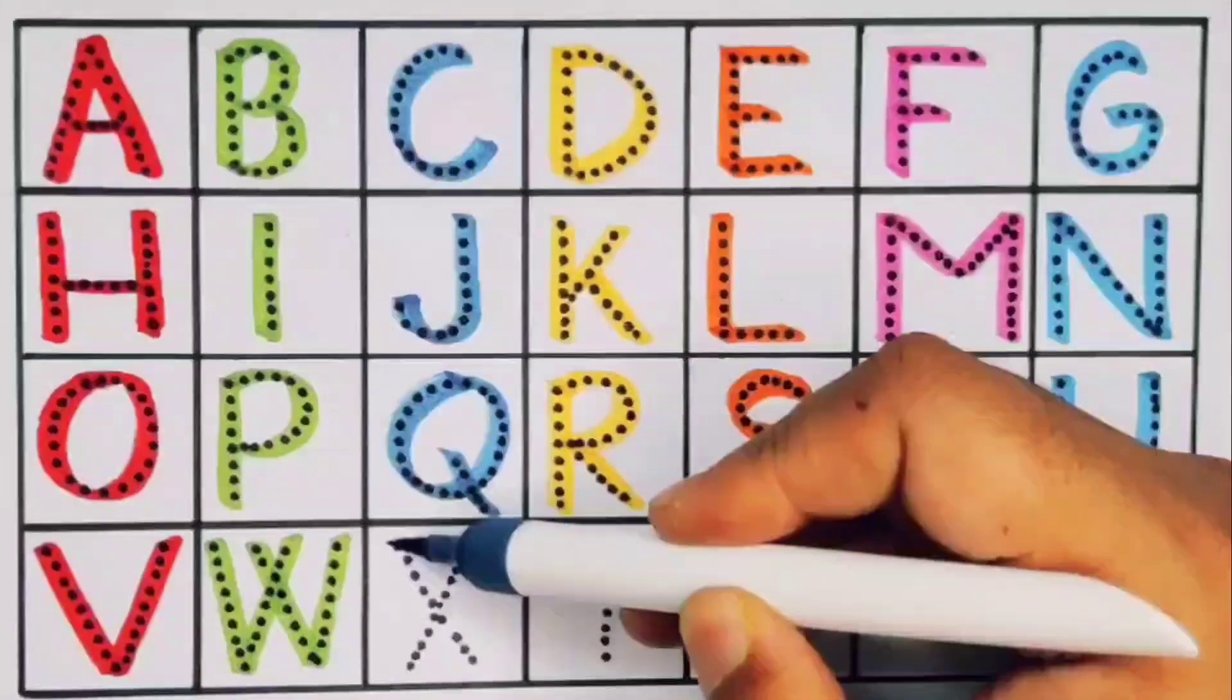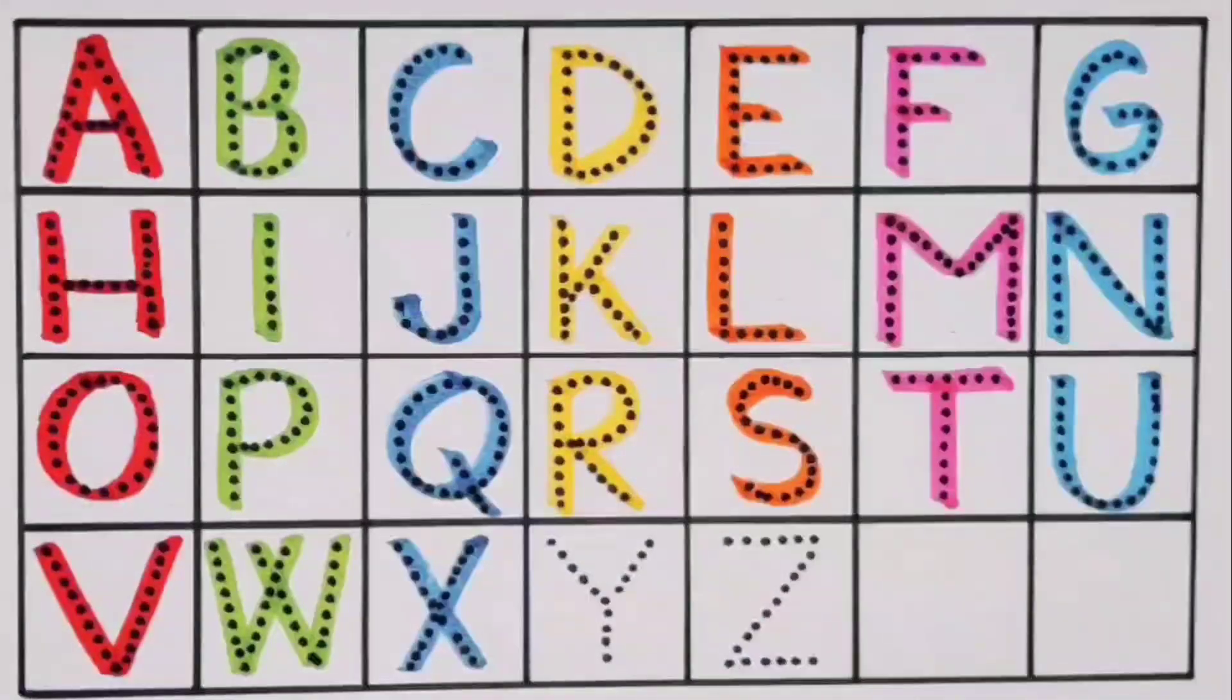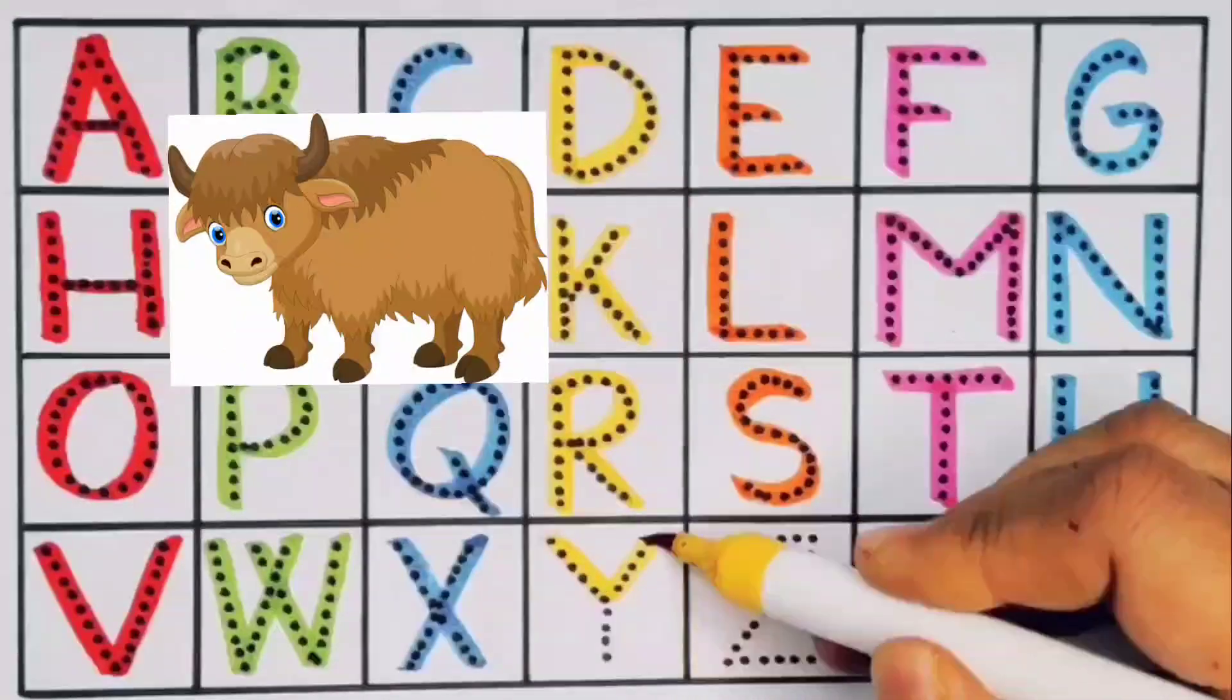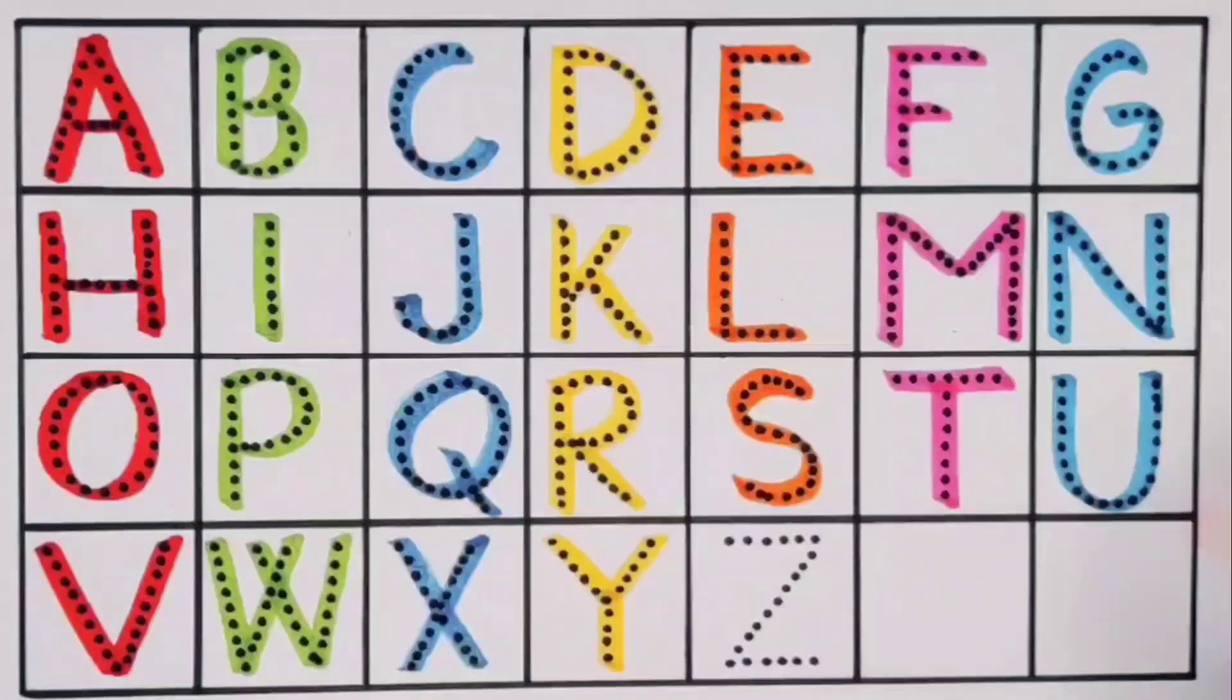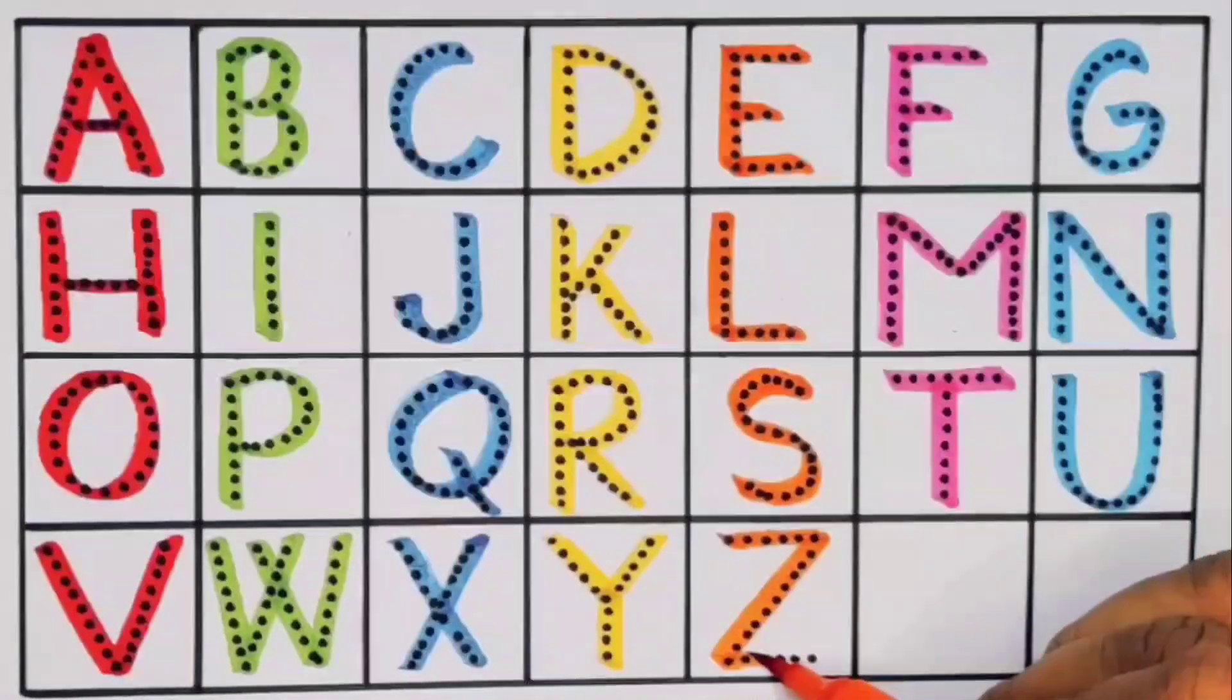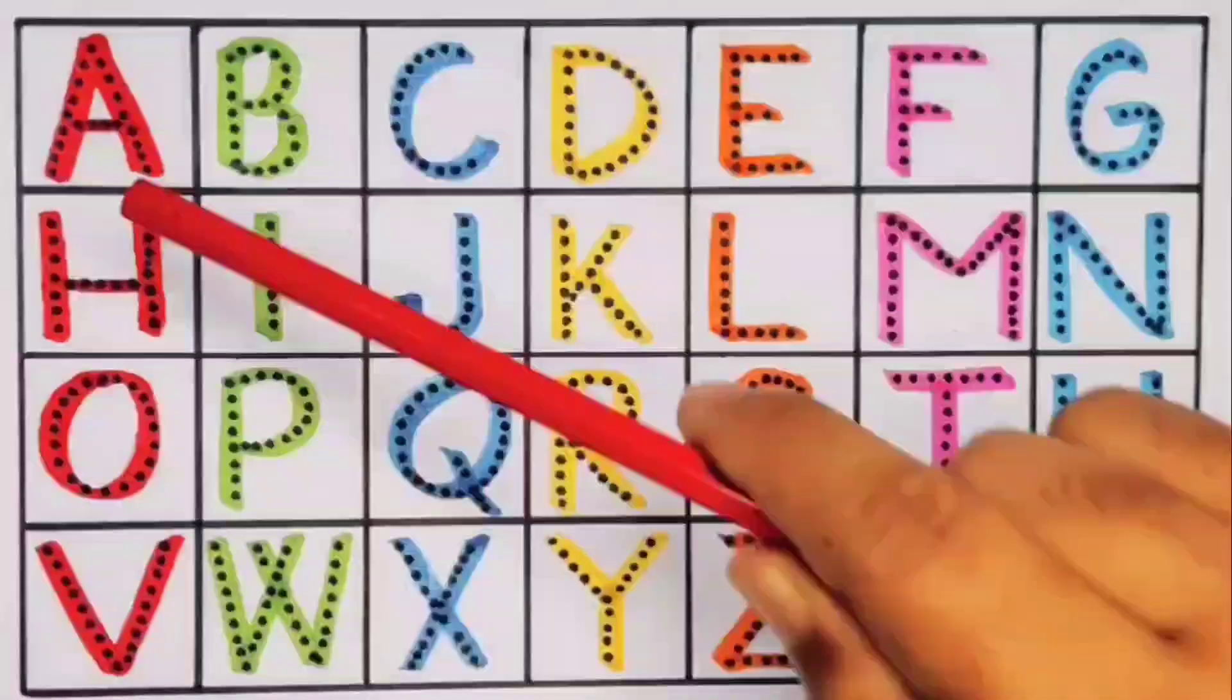X for xylophone. What we learn: we learned A for ant.